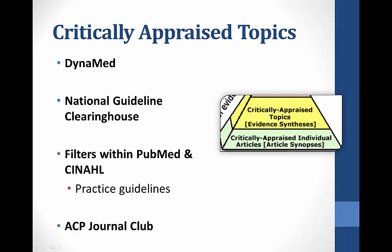Critically appraised topics are where the literature on a particular disease, condition, treatment, or so on is evaluated according to evidence-based criteria. These are sort of like systematic reviews but not quite as rigorous. At the ISU library you can use the DynaMed database — it's super easy to search and it's all evidence-based. The National Guideline Clearinghouse is available to search for free and has a ton of guidelines on all kinds of topics. You can use filters within both PubMed and CINAHL to limit to just practice guidelines. A source for critically appraised individual articles is something like the ACP Journal Club, where experts review articles on a given topic to make treatment and practice recommendations.